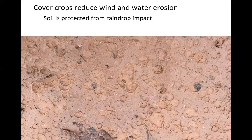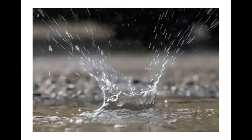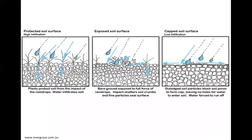Cover crops also cover our soil. Remember, some of the key components were to keep the soil covered. The impact of a raindrop is like a little missile — it is a bomb on soils that are not covered. That impact not only hits the soil but dislodges soil particles, making them available for transport in runoff. Also, these particles can clog up the surface or create a crust.